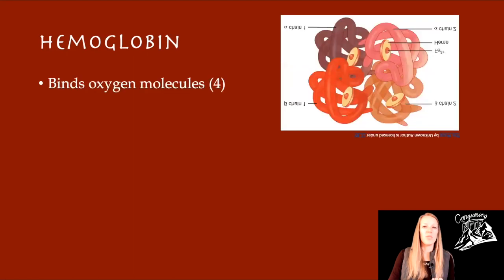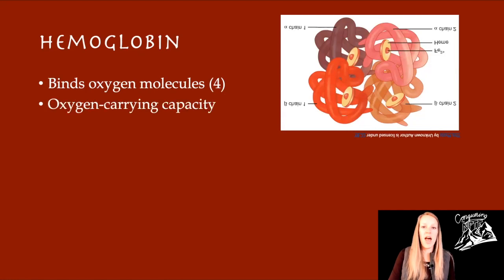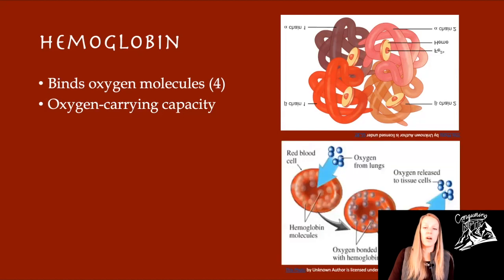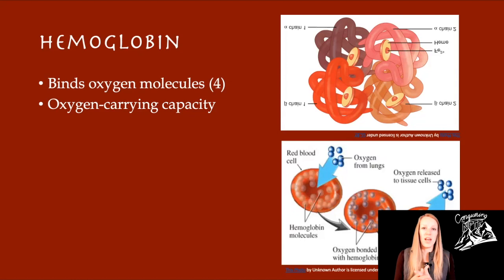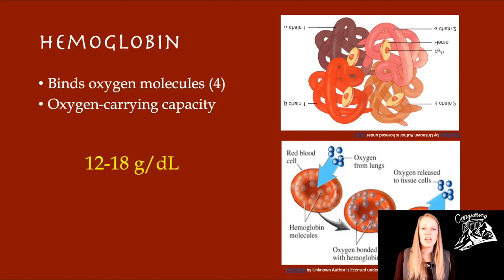The next value is hemoglobin. This is a molecule in our blood that links four oxygen molecules at one time — it's essentially the oxygen-carrying capacity of our blood, and it lives within the red blood cells. Hematocrit and hemoglobin are really closely linked; if one is off, the other might be off too. There's also a distinction between males and females, but we are going to know a range: 12 to 18 grams per deciliter. The specific units can actually help you on the test — hematocrit needs a percentage answer, while hemoglobin has units, so that could help you get to an answer.